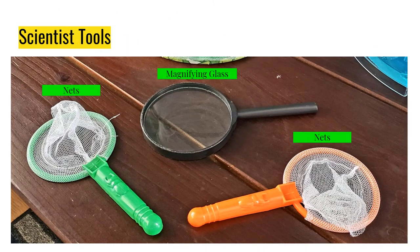These are some of the scientist tools that we will use during our observation. Of course, we use nets so that we don't have to handle the insects. And of course, the magnifying glass is used to look at things a lot closer so that we can see them really well. Especially in the nymph stage when they're so tiny, the magnifying glass comes in handy.